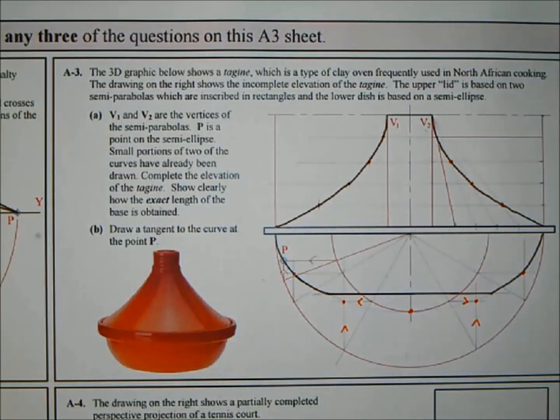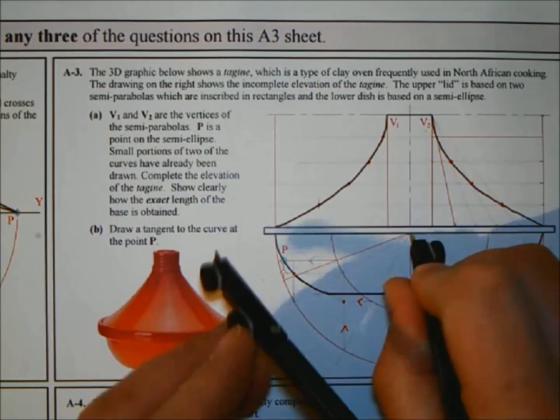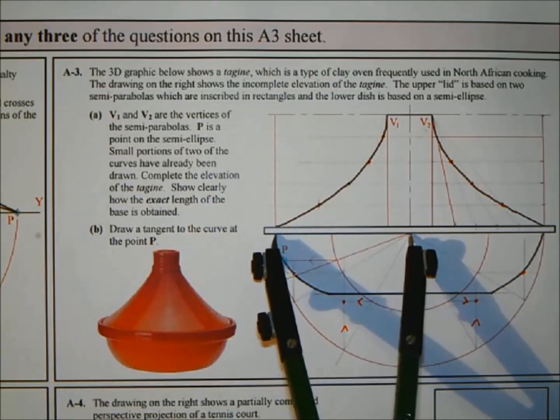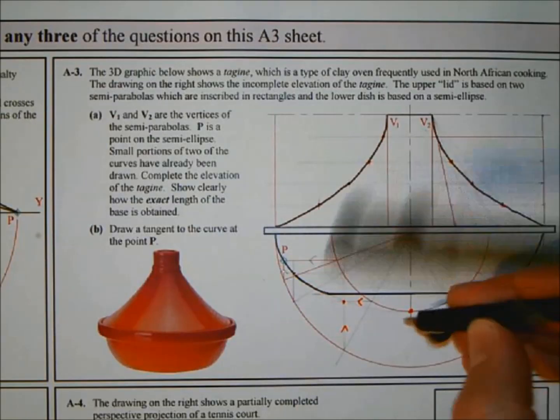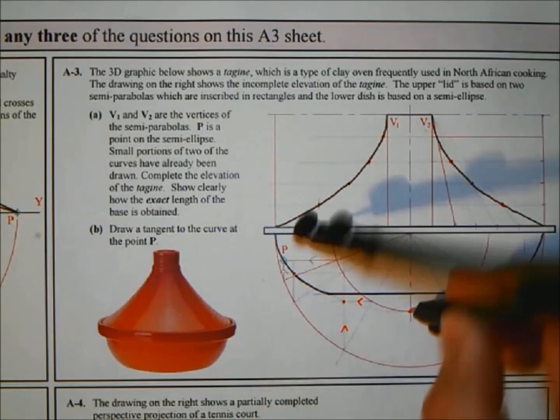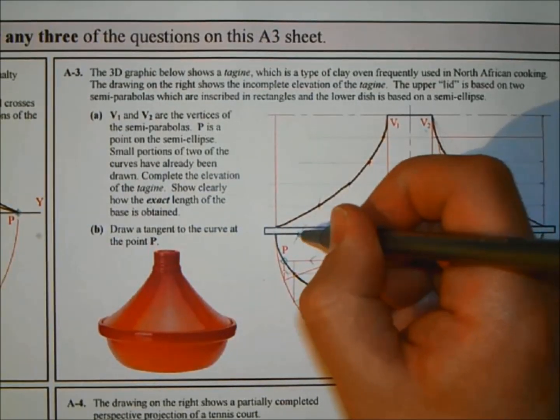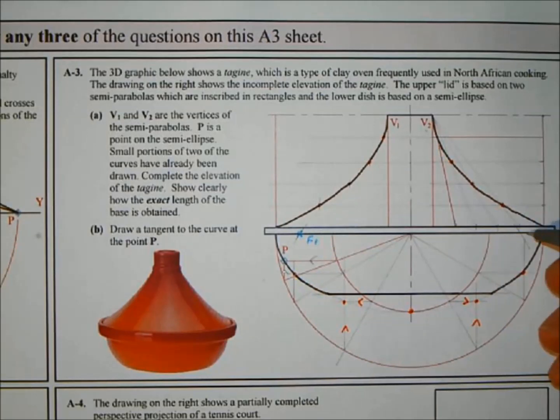That is part A of the question done. Part B: draw a tangent to the curve at point P. We have point P here on the ellipse. If you need to draw a tangent to a point on the ellipse, first thing you'll need is the point, which we have, and then we need focal points. To find the focal points of an ellipse, you need the two radii. Get the major axis radius on your compass. Move the pin now to the top of the minor circle up here, and cut the central line to the left and to the right. That will give you the focal points. This is F1, and over here is F2.